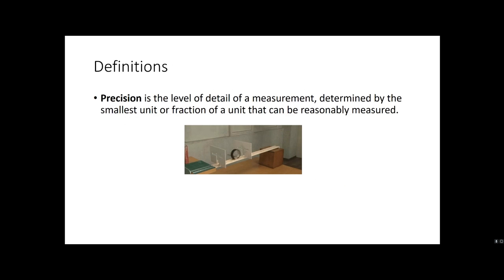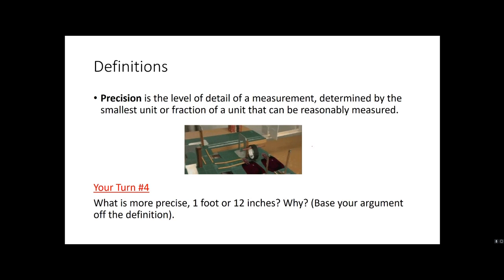Precision. Precision is the level of detail of a measurement determined by the smallest unit or fraction of a unit that can be reasonably measured. So obviously, if you're watching this gif, you're just like, wow, look how precise that guy is. He literally went to the smallest degree, the smallest measurements possible, and he was able to do something very interesting. So that's an example of precision. If we look at Your Turn #4, what is more precise, one foot or 12 inches? Now why? Base your argument off the definition. So again, read the definition of precision and try to explain with your group. Try to get a consensus going, and we'll write that out in our notebooks.